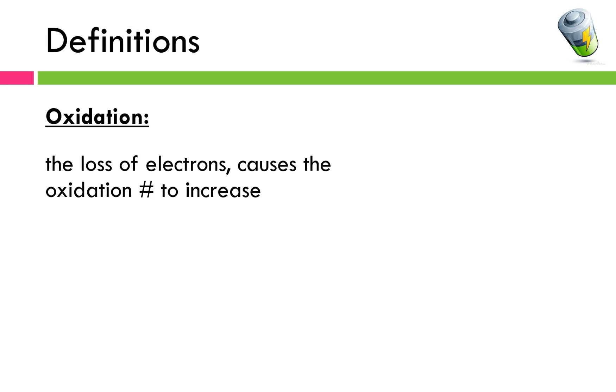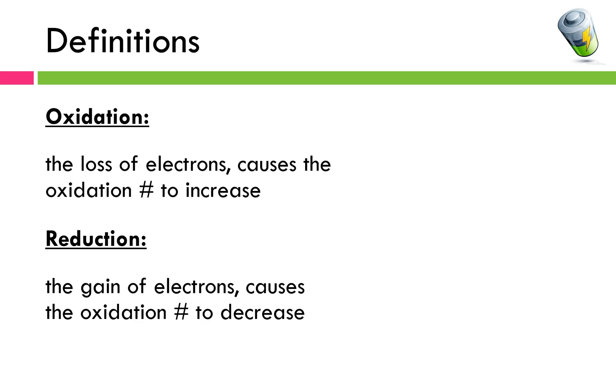Oxidation is the loss of electrons. When an element undergoes oxidation, it causes the oxidation number or oxidation state, we'll be using those two terms interchangeably, to increase. Reduction is the opposite of that. Reduction is the gain of electrons and that causes the oxidation number to decrease.